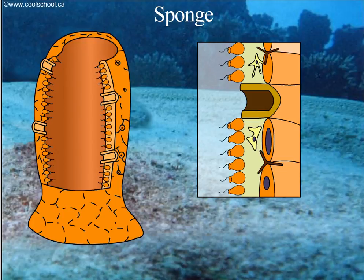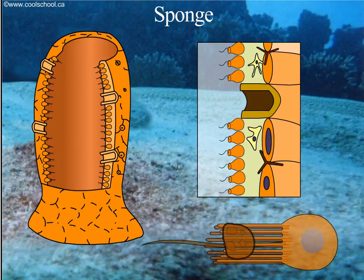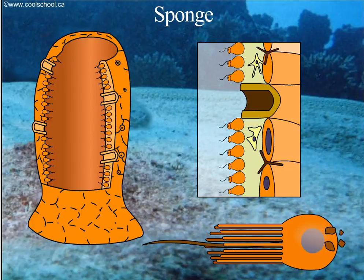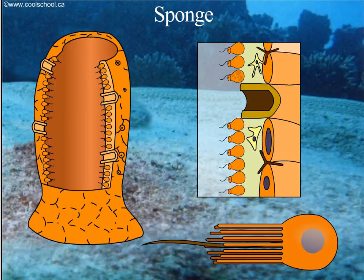Collar cells digest the nutrients and transport the digested nutrients to the amoeboid cells for further digestion. Oxygen also diffuses through the collar cells to the amoeboid cells.